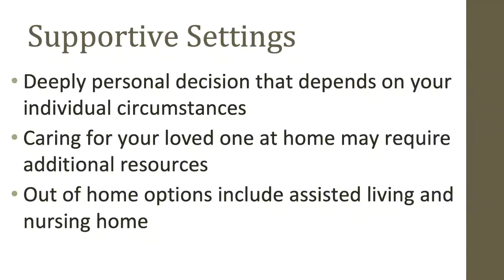Long-term care facilities are another option to consider and there are several kinds, each providing a different level of medical care, personal assistance, and support services. Assisted living facilities usually provide private apartment-style living and offer limited services such as housekeeping — this type of facility is probably more appropriate for someone with mild stage disease. Nursing homes are another type of long-term care facility that provide skilled care such as assistance with feeding and bathing, and all resources are on site and provided by trained personnel.